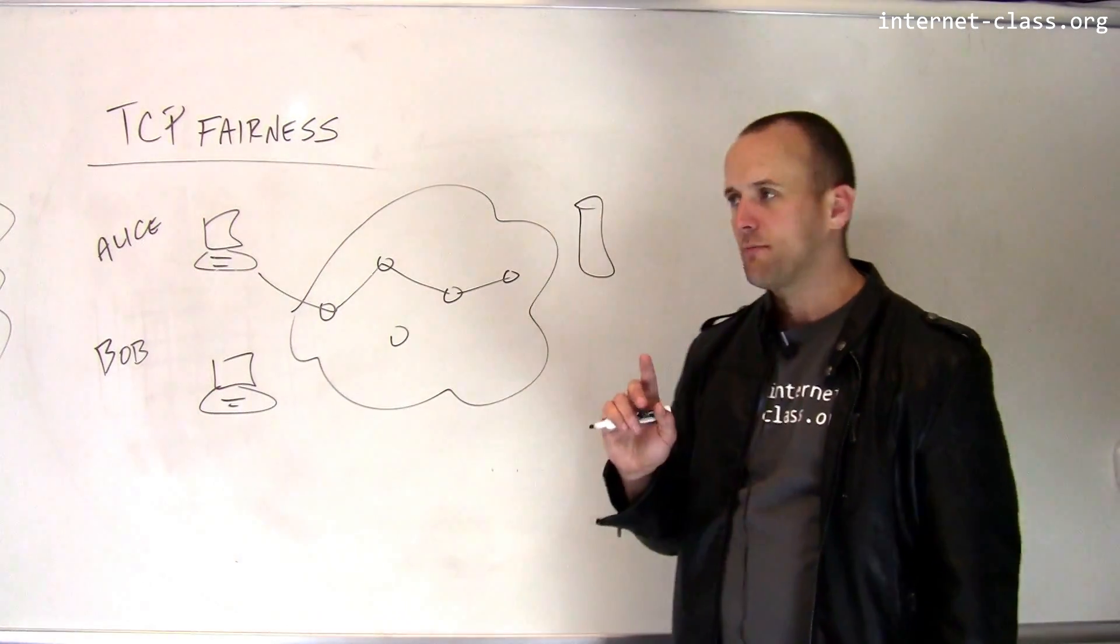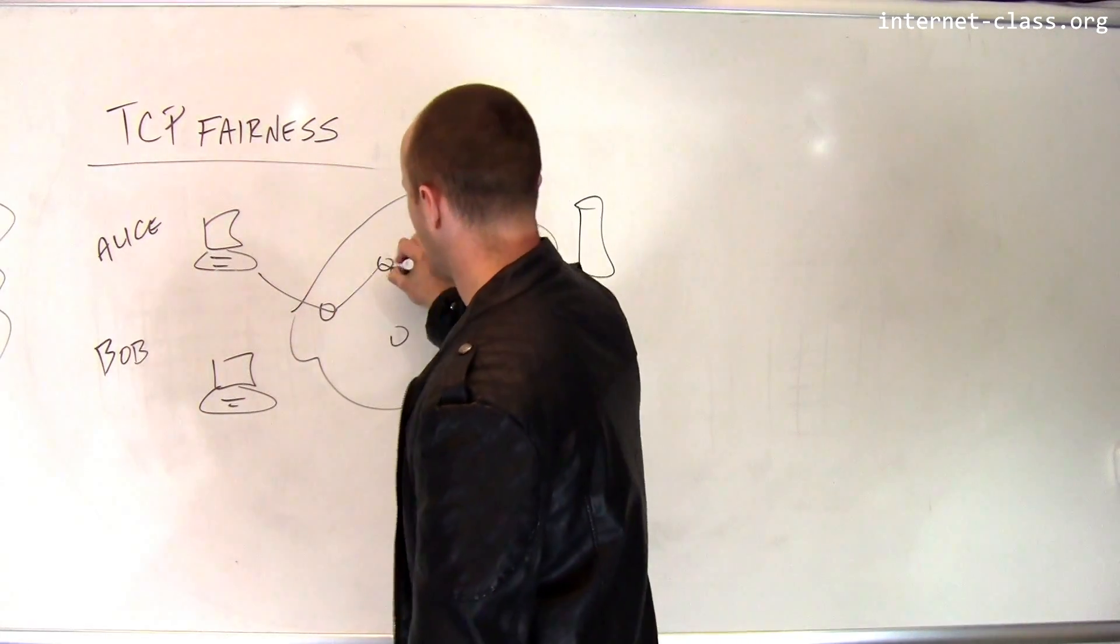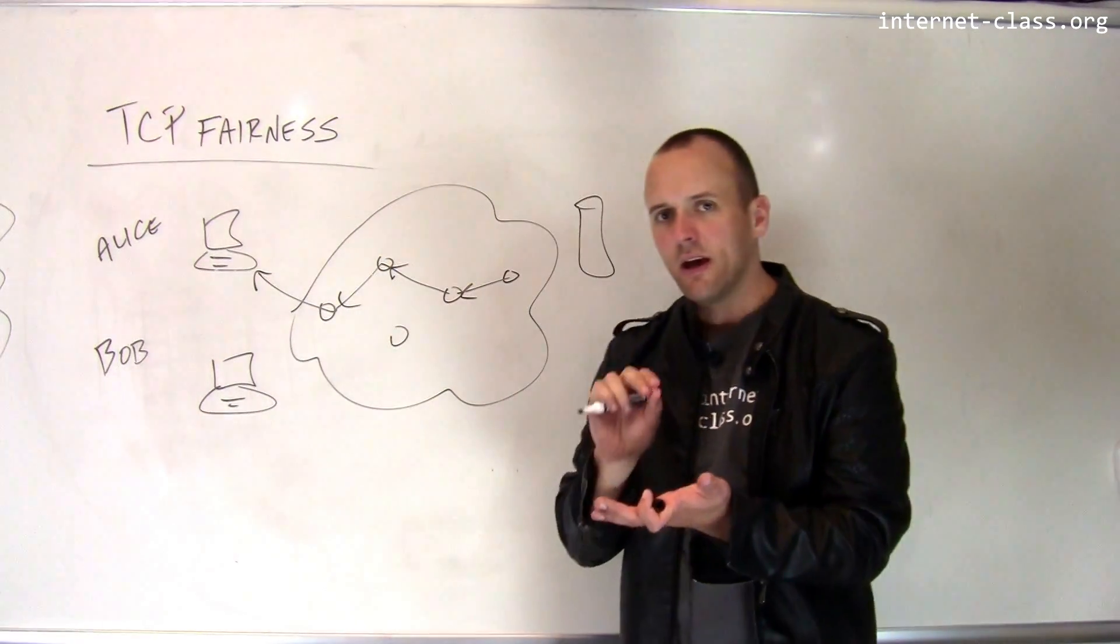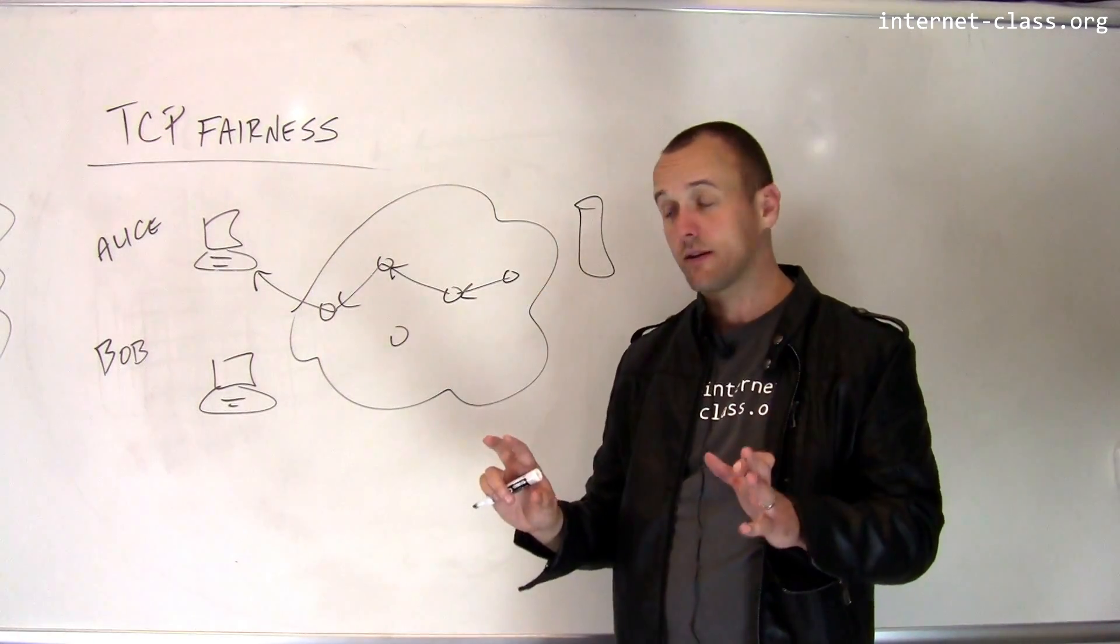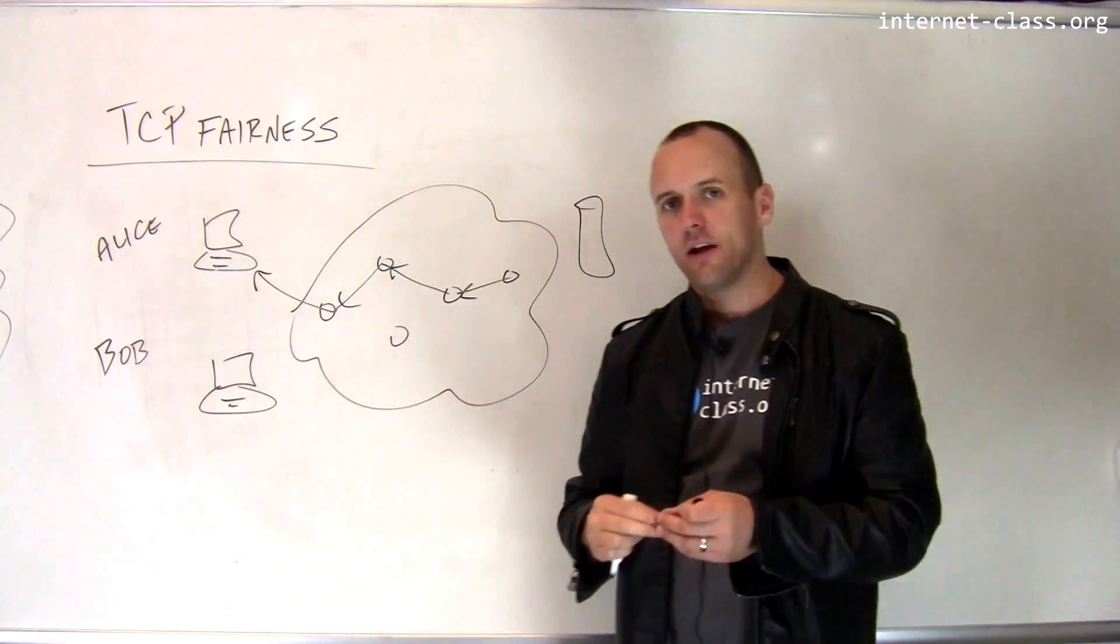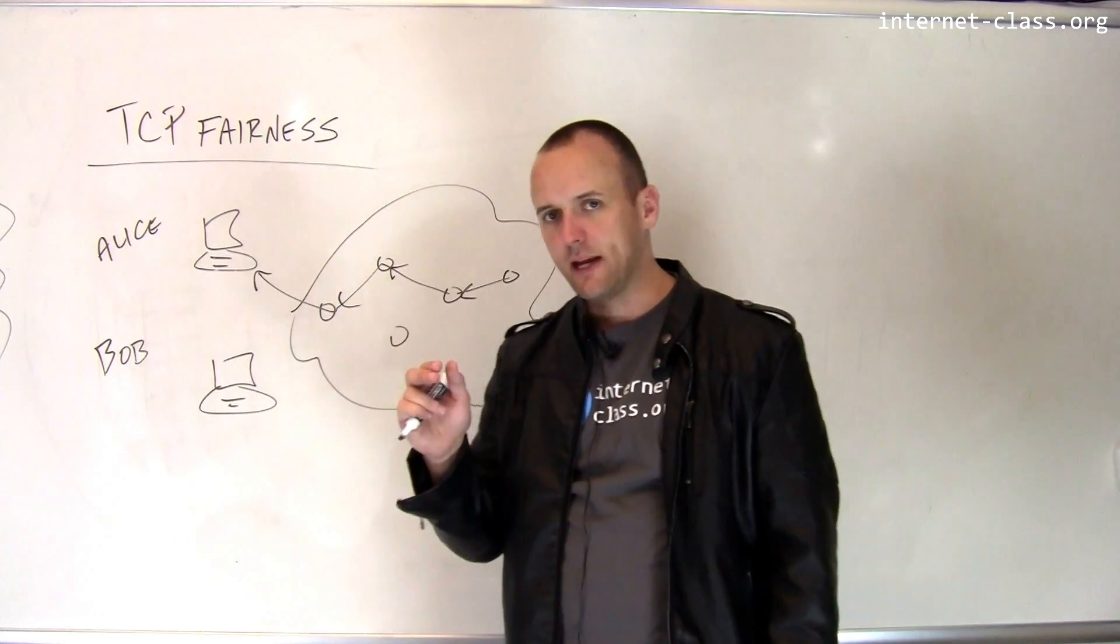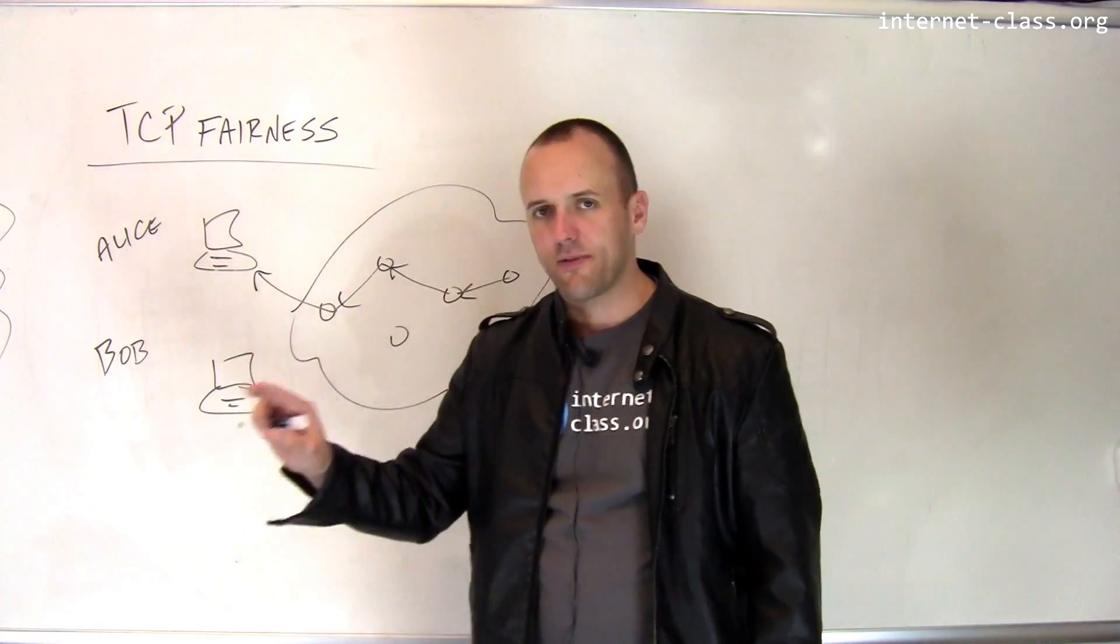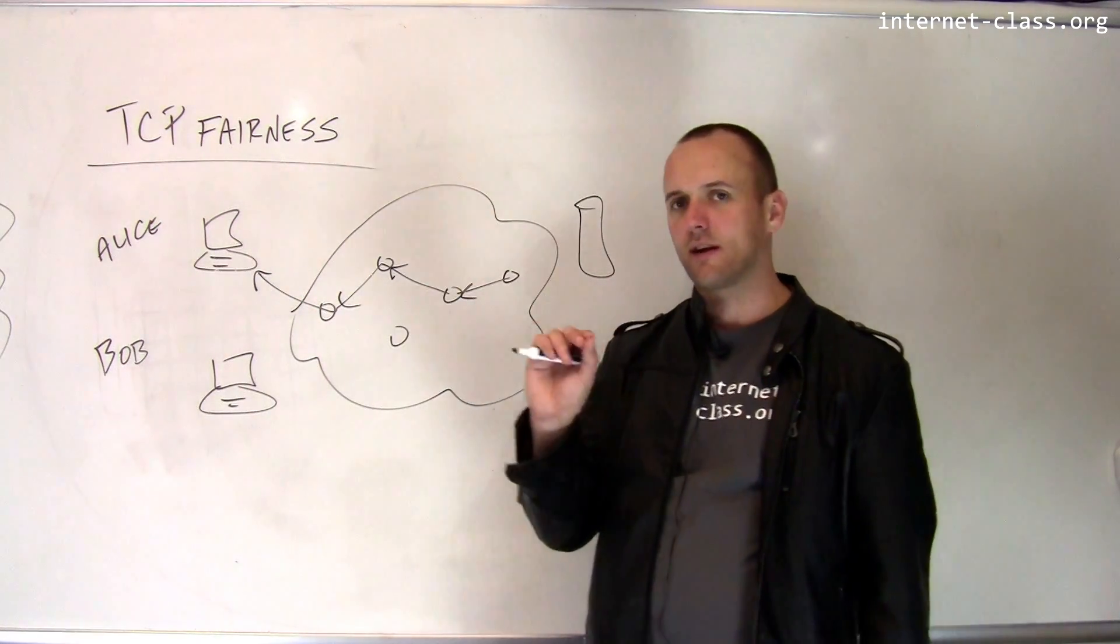So the first thing that TCP will do when Alice starts retrieving this file, the server is starting to send information back to Alice's machine. TCP creeps into this process. This is something that's called slow start. When TCP starts up, it has no idea what the capacity of these links are. And so rather than overload the network right away, it starts off at a slow speed and then it gradually increases speed until it notices that packets are starting to get dropped.